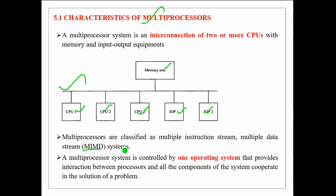About MIMD systems, we discussed in Flynn's classification on parallel processing chapter. And as we know that a multiprocessor system contains multiple processors, these multiple processors have to be controlled by one operating system that provides proper interaction between multiple processes in order to achieve high cooperation in solving a particular problem.